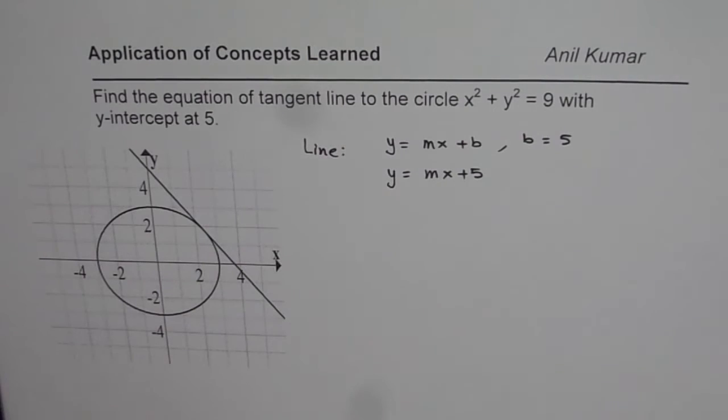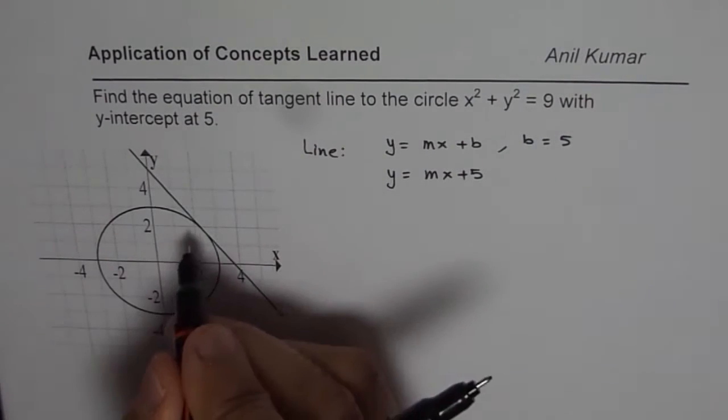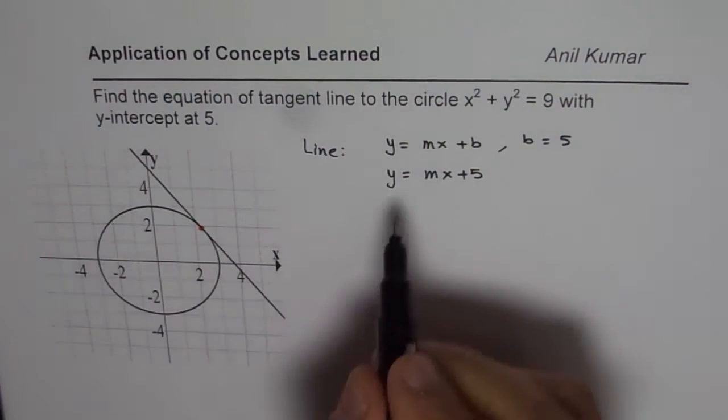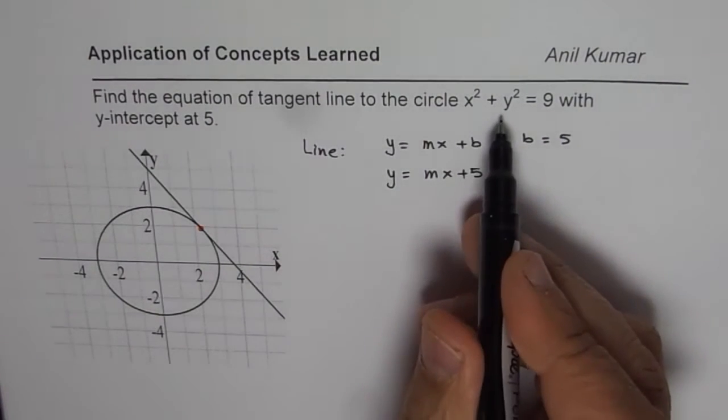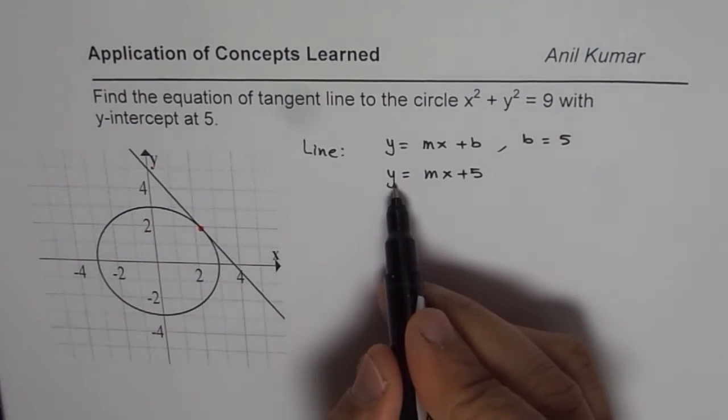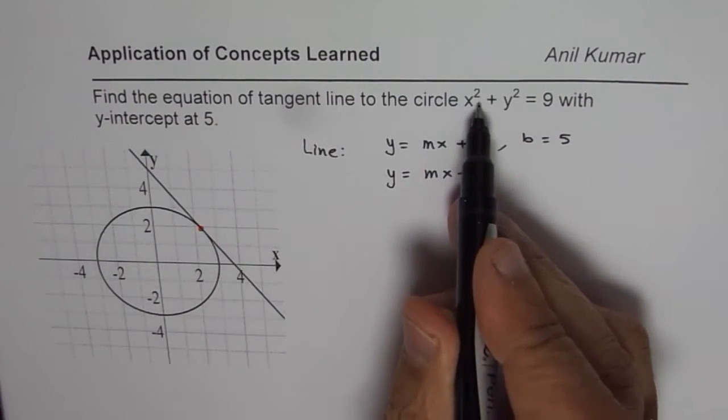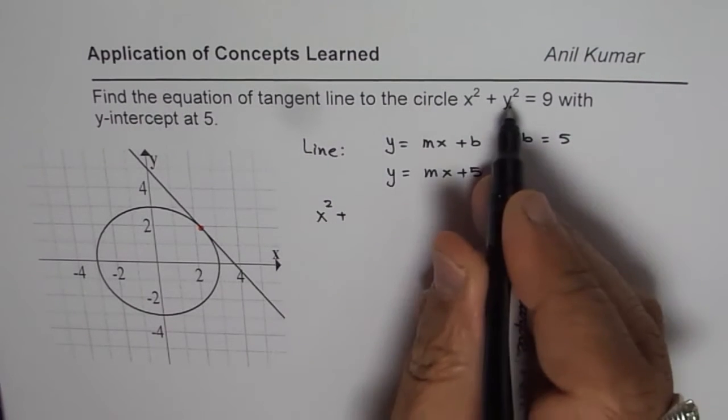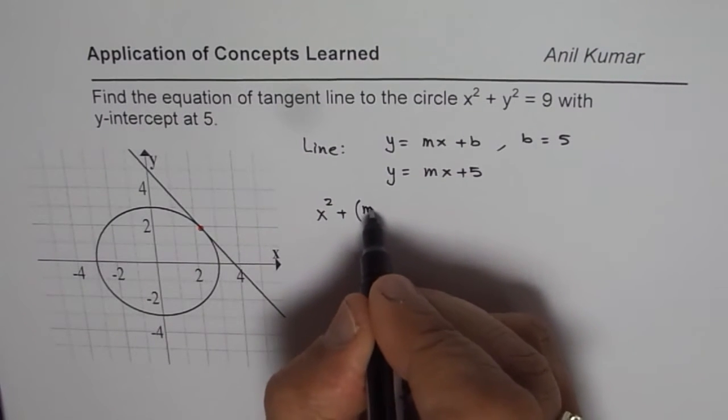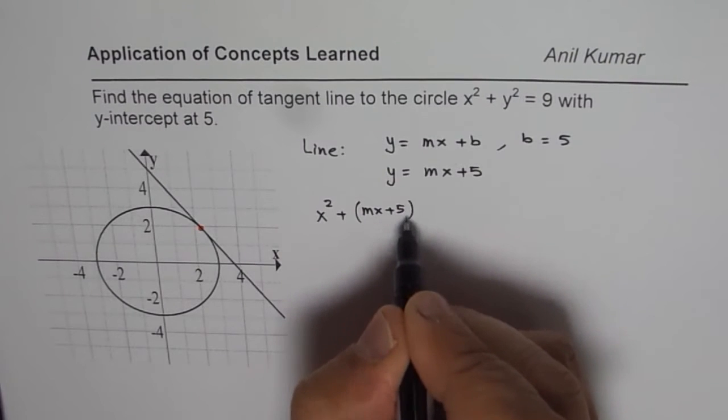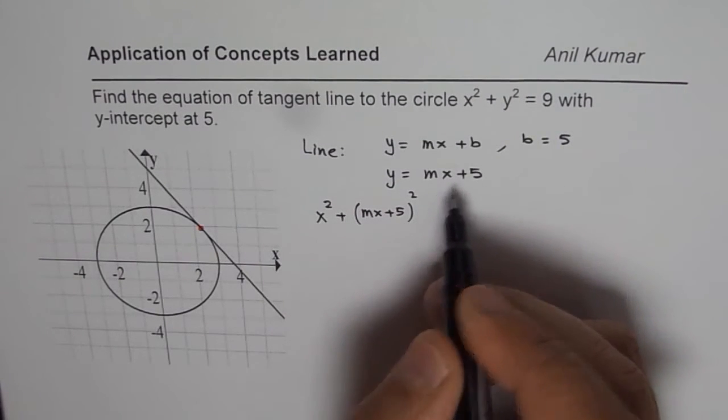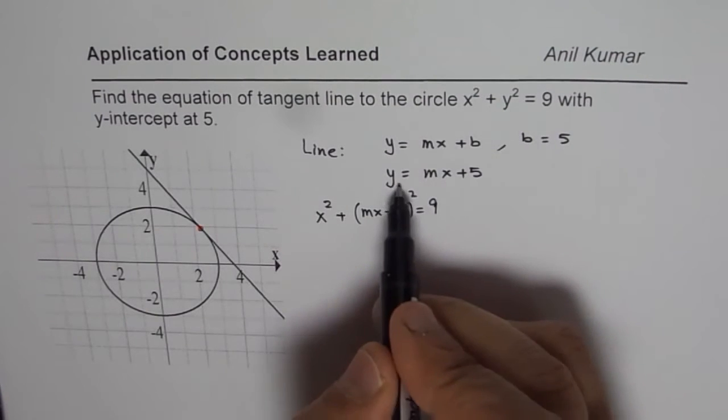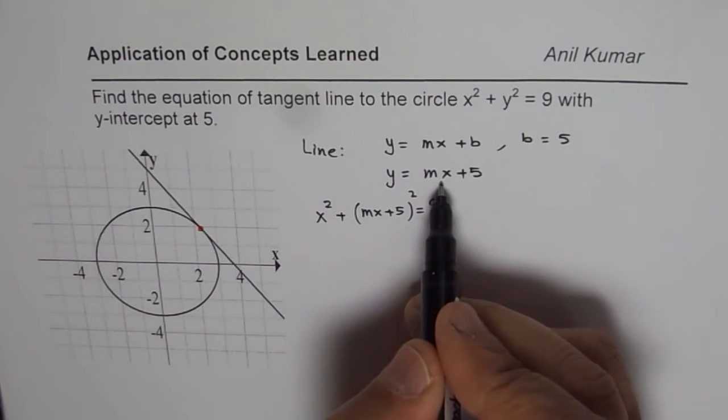Now, since the line is tangent to the given circle, so they have a point common. At this point, both y values should be seen. So, what I can do is, I can substitute this in my equation for the circle. So, I get x square plus instead of that y, I am writing mx plus 5 whole square equals to 9. I replaced that y with the y in my equation of line.